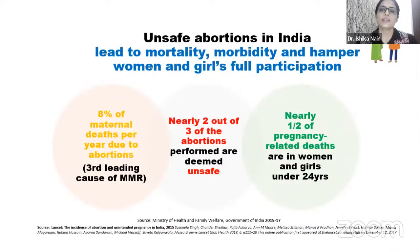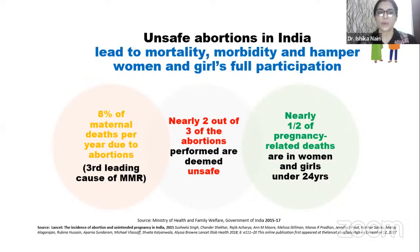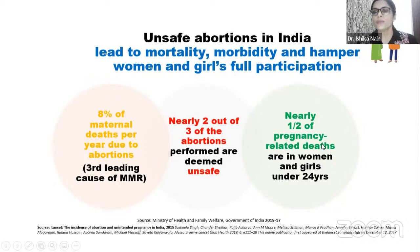Why should abortion be safe? Because unsafe abortions in India lead to mortality, morbidity, and may hamper women and girls' full participation. It is a well-known fact that 8% of maternal deaths per year are due to abortions, and it is the third leading cause of maternal mortality. Nearly two out of three abortions performed are deemed unsafe, and nearly half of pregnancy-related deaths are in women and girls under the age of 24 years.